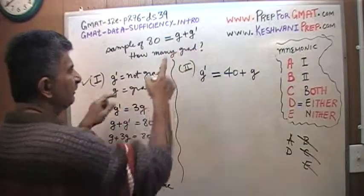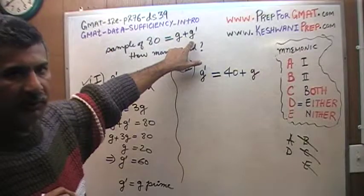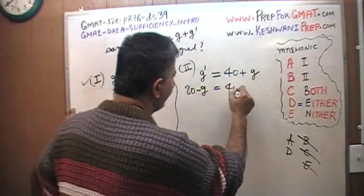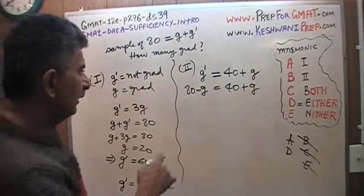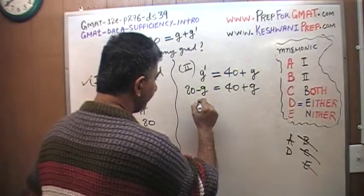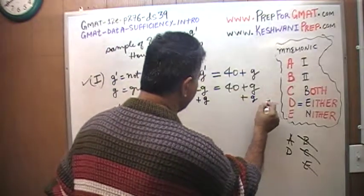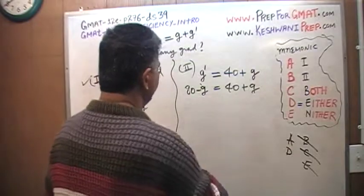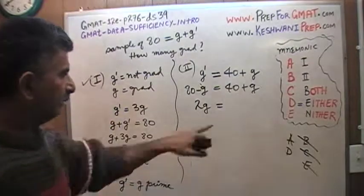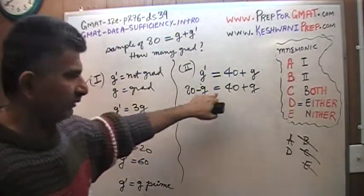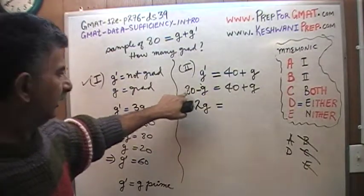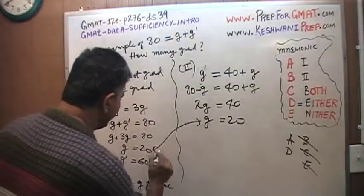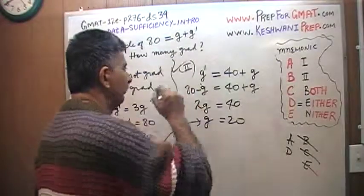Substituting into our equation G' = G + 40, we replace G' with (80 − G): 80 − G = G + 40. Bringing the G to the left side gives 2G, and bringing 40 to the right gives 80 − 40 = 40. So 2G = 40, which means G = 20. This information is also enough to figure out how many graduates are in the sample, and it gives exactly the same answer as before.